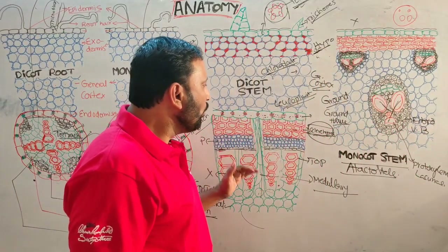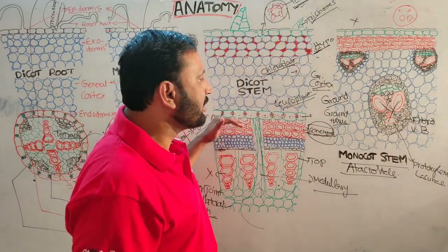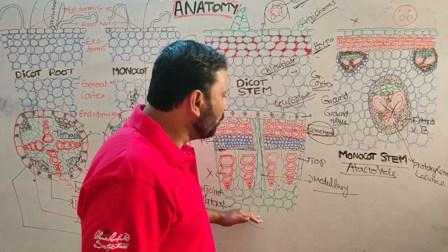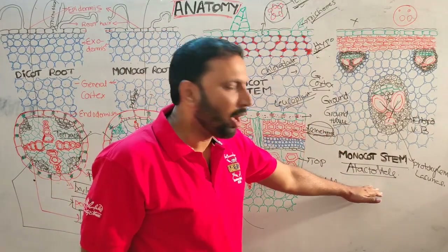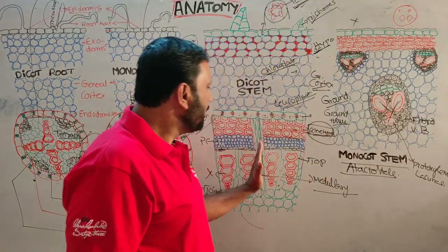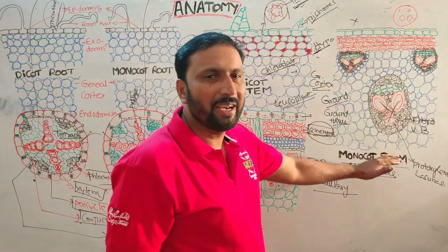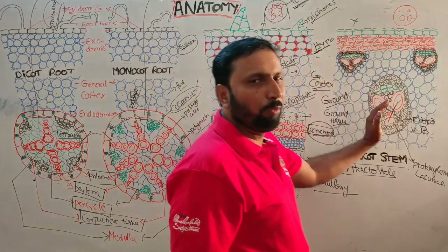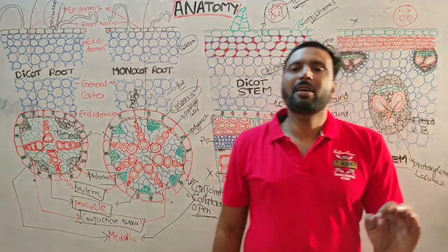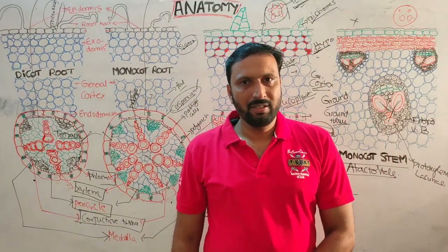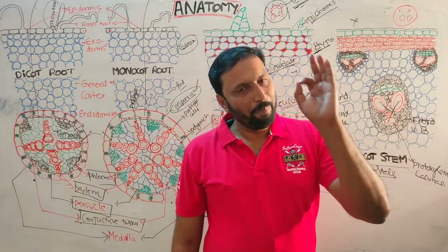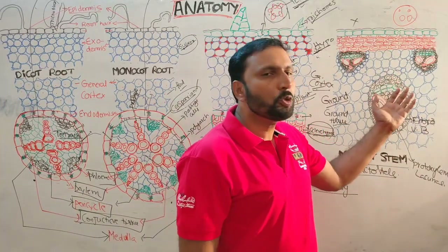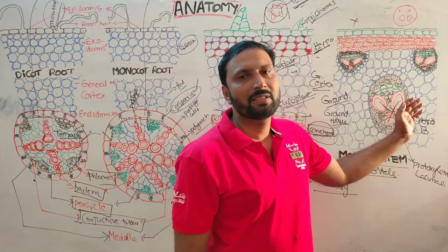Pericycle is present in dicot stem but absent in monocot stem. Medulla and medullary rays are present in dicot stem but absent in monocot stem. Especially in the phloem of monocot stem, phloem fibers and phloem parenchyma are also absent — only sieve tubes and companion cells are present.